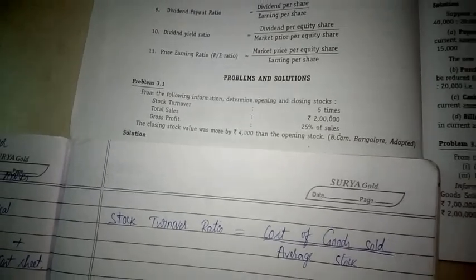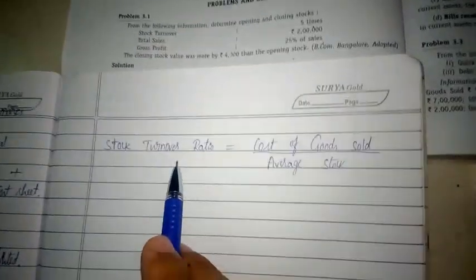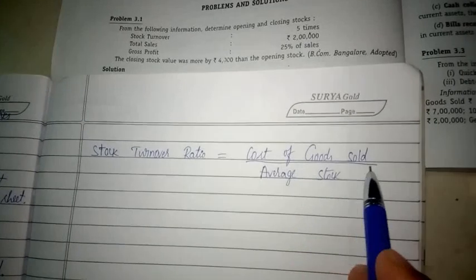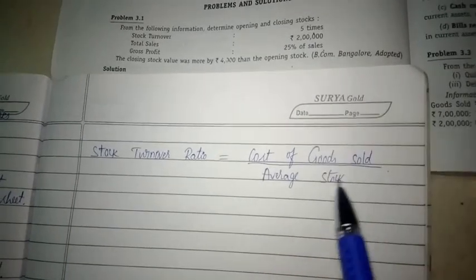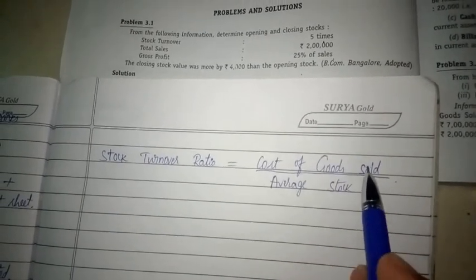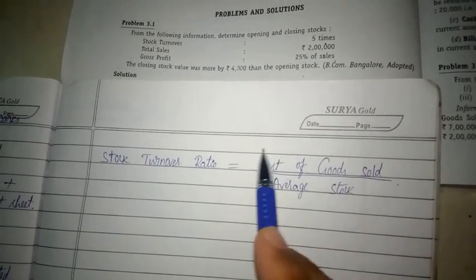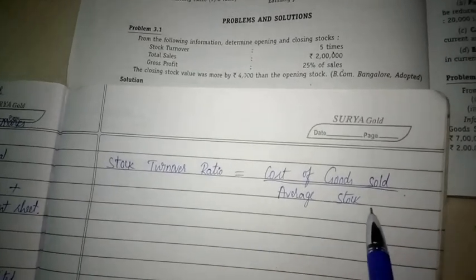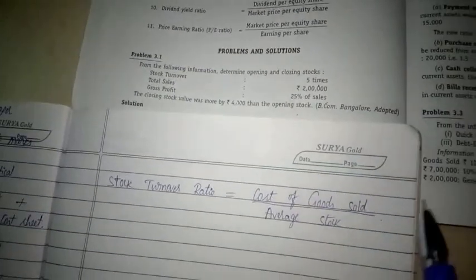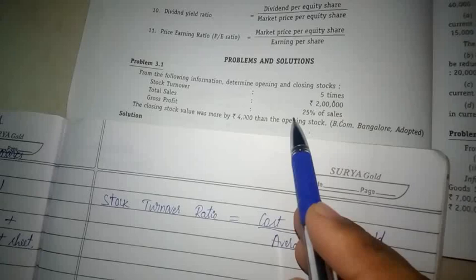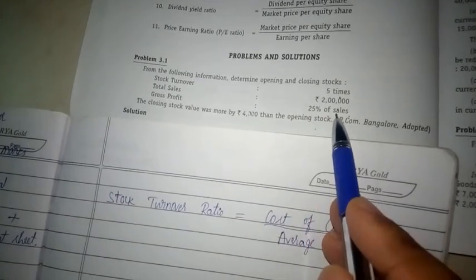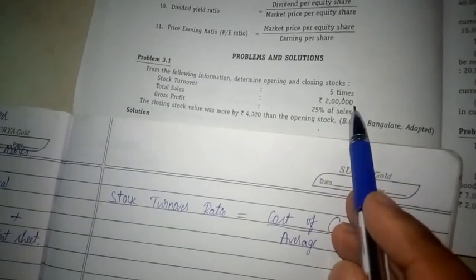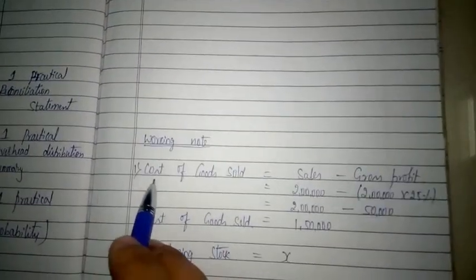The stock turnover ratio is equal to cost of goods sold divided by average stock. So we need to find out the cost of goods sold and average stock. The cost of goods sold can be calculated by deducting gross profit from the sales. Let us make a working note first.